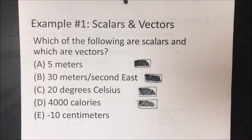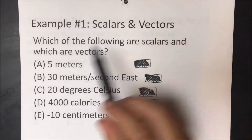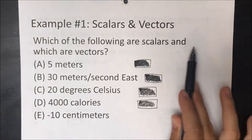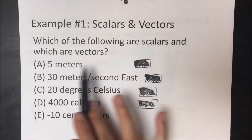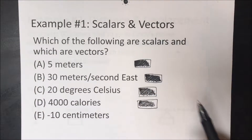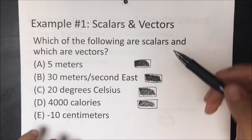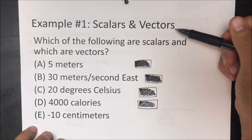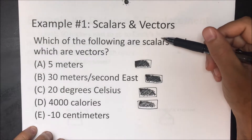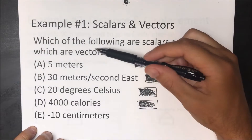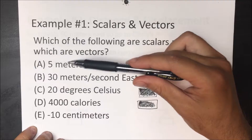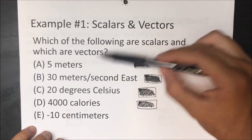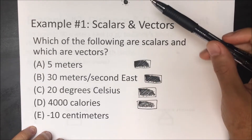Let's look at this first example here: which of the following are scalars and which are vectors? As we learned, scalars just have a magnitude, while vectors have a magnitude and a direction.